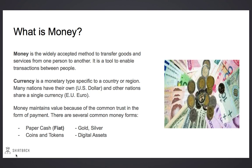Other nations share a single currency. A common example is the euro, which is the currency for the member nations of the European Union. Money maintains its value because people have a common trust in the form of payment. There are several common money forms we see today: paper cash, commonly called fiat; coins and tokens; precious metals such as gold and silver; and a new form, digital assets.